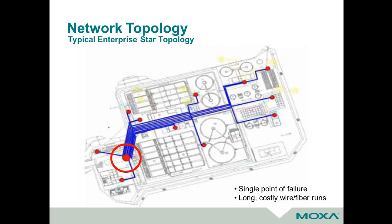The second main decision is what kind of topology to consider. This diagram shows a star topology, which is common in enterprise or office situations, where you've got some sort of control center and individual lines going out to all your devices. The disadvantage of this in an industrial situation is you've got a single point of failure — if that switch at the core goes down, you lose everything in your network. It also can be costly, as you've got to run wire out to each individual device.